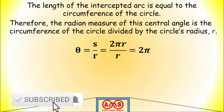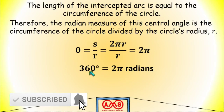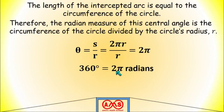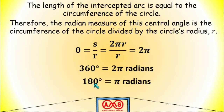So we can say that 360 degrees is equal to 2π radians, and if we divide both sides by 2, we get 180 degrees equal to π radians. This is the relationship between degree and radians.